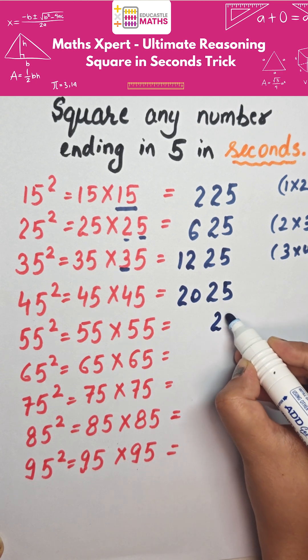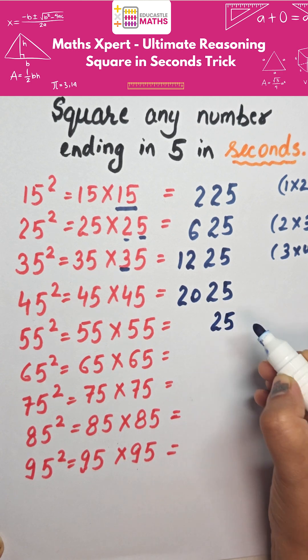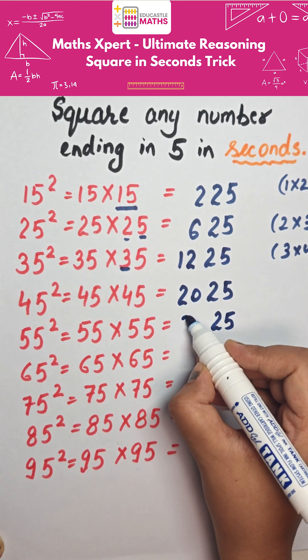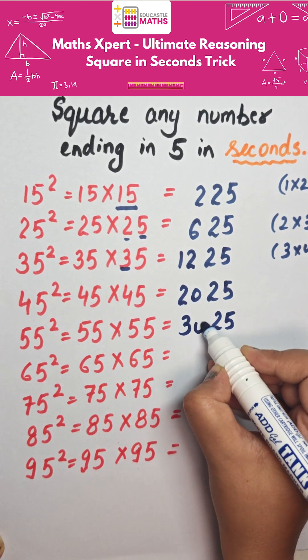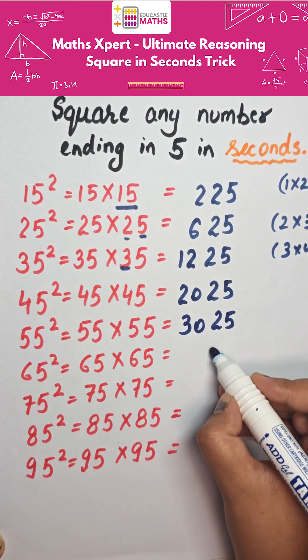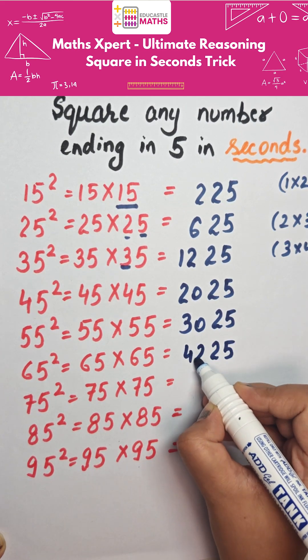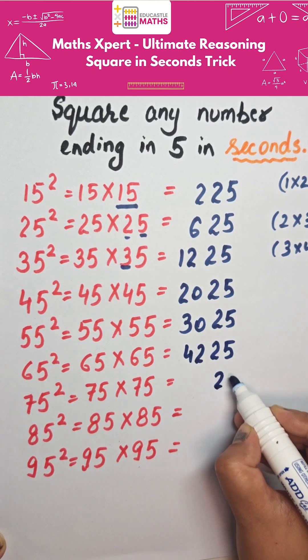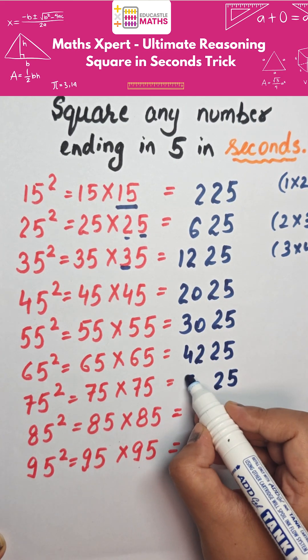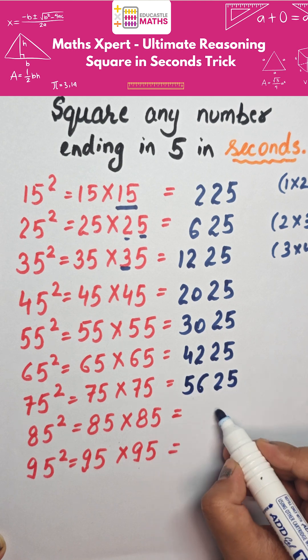So we can do other numbers as well — 55, 65, 75, 85, 95. We can do the square of any number which is ending with 5.